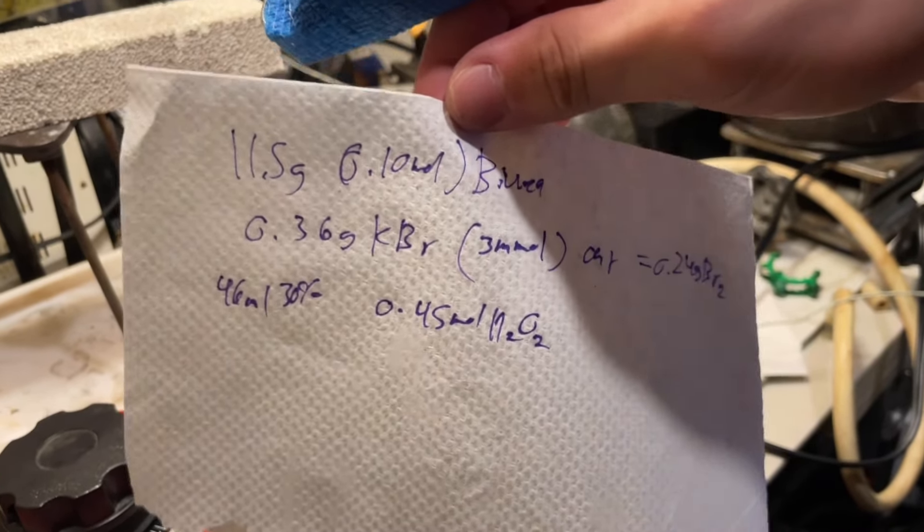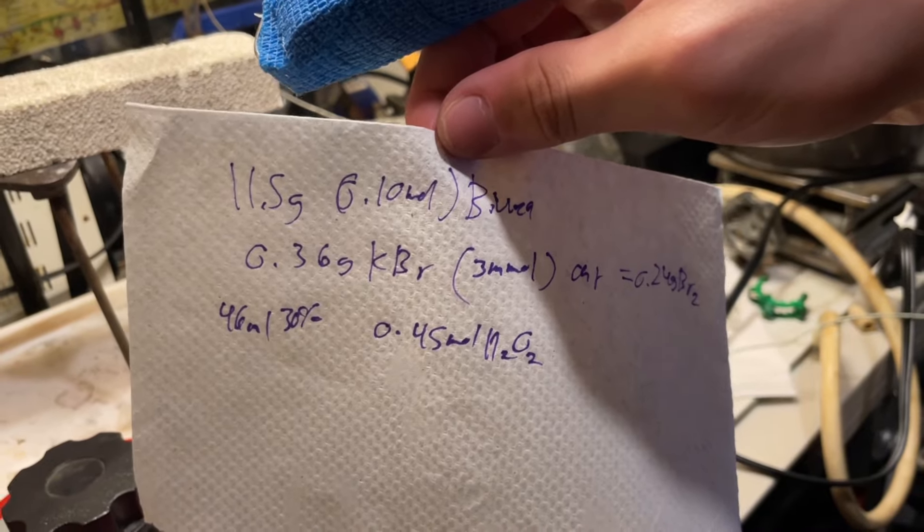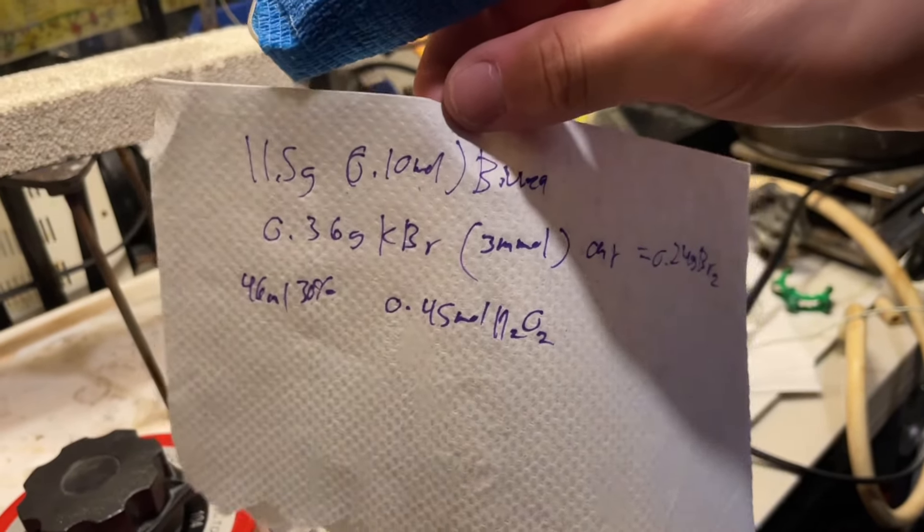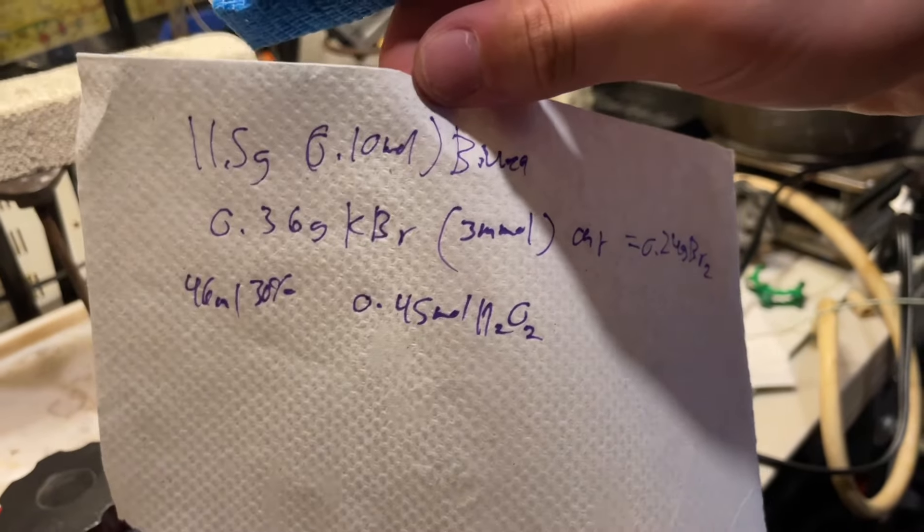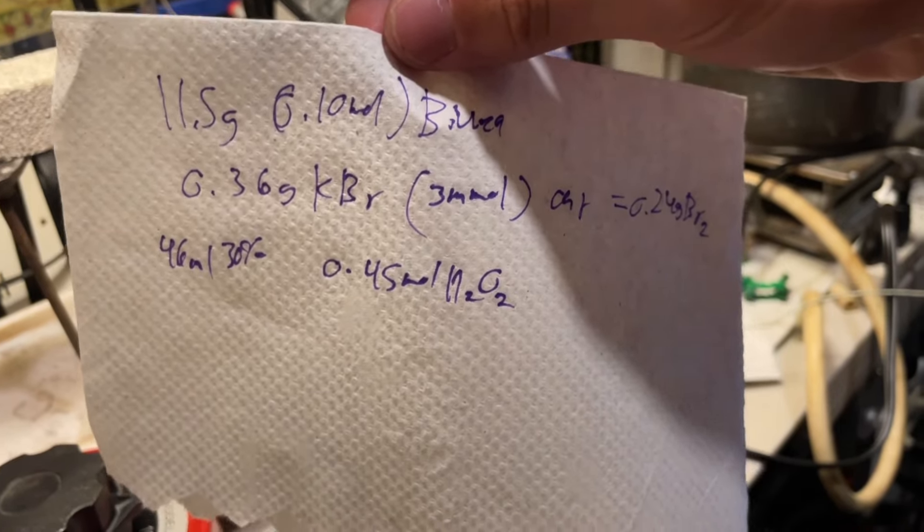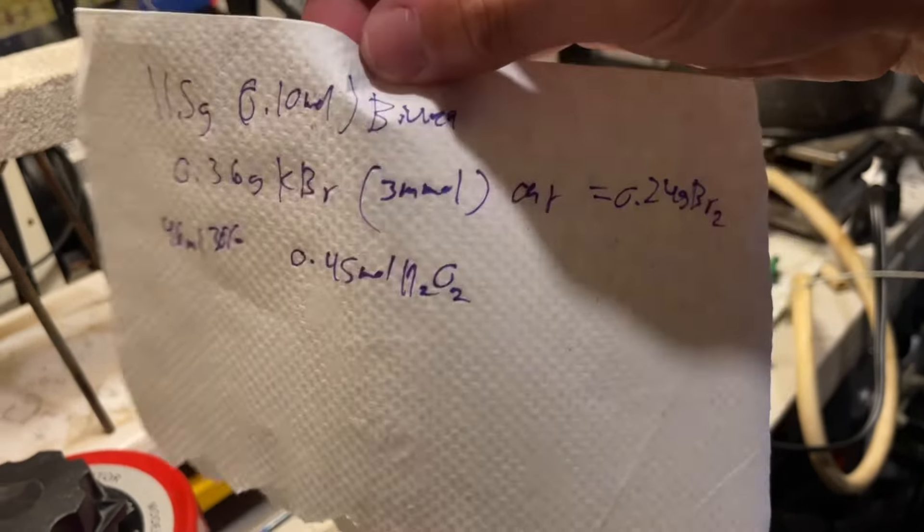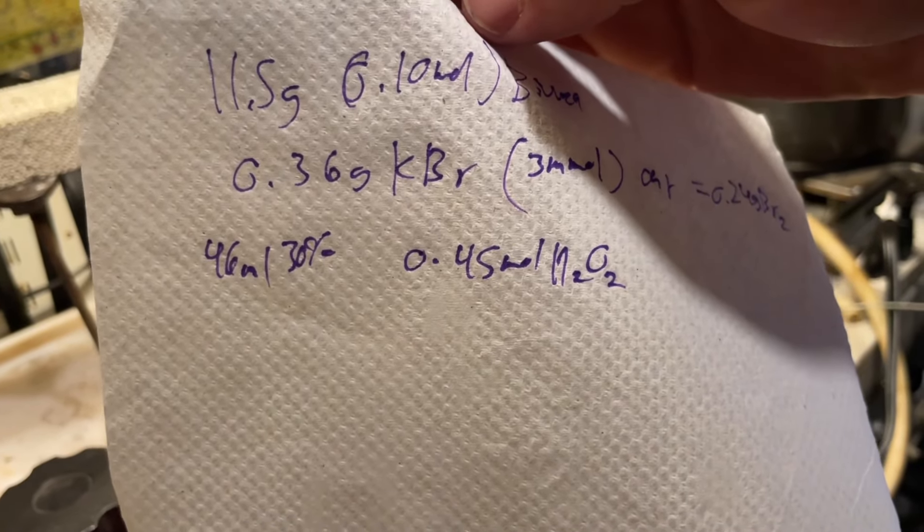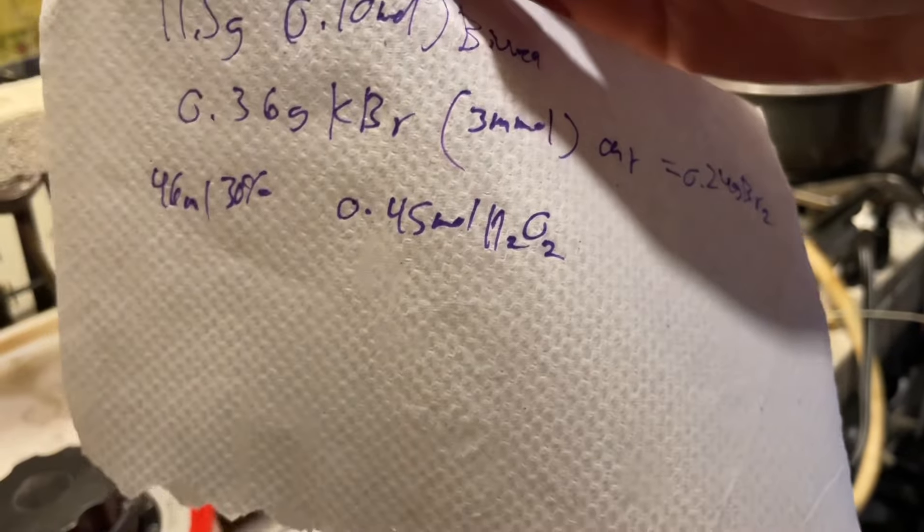Here are the back of the napkin calculations I did for this. So this is scaled up from the paper by five. 11.5 grams, which is 0.1 mole of biurea. 0.36 grams of potassium bromide as the catalyst, but I didn't have that, so I used 0.24 grams of elemental bromine, and 46 milliliters of 30% hydrogen peroxide, which is 0.45 moles of hydrogen peroxide as the oxidizer.